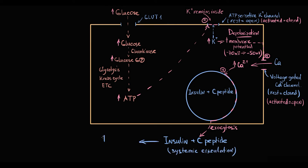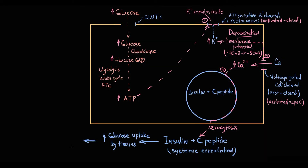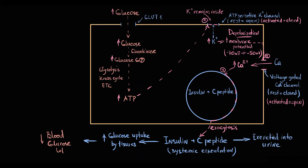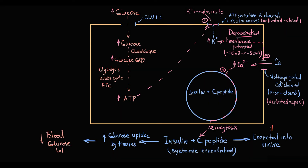Insulin in the circulation increases glucose uptake by the tissues, and the more glucose tissues take up from the circulation, the lower blood glucose level becomes. C-peptide is excreted unchanged in the urine; therefore, the excretion rate of C-peptide can be used to assess and monitor the function of beta cells. Decreasing C-peptide excretion indicates that insulin secretion by pancreatic beta cells is decreasing.